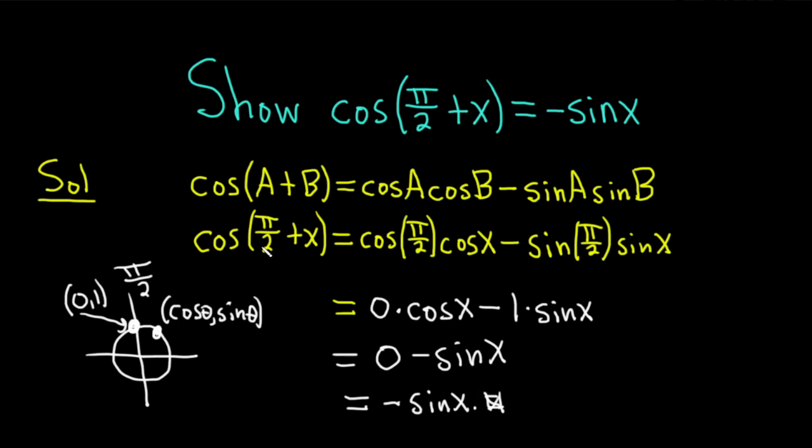Pretty simple if you know the formula. You just apply it directly to the cosine of pi over 2 plus x, and then go from there. I hope this video has been helpful to someone out there in the world. Until next time, good luck.